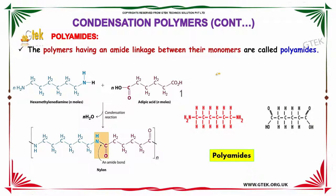Polyamides are polymers having an amide linkage between the monomers. For example, hexamethylenediamine of N moles reacting with N moles of adipic acid in the presence of N moles of water undergo condensation reactions to form nylons. Nylons contain an amide group, so they are called polyamides. NH₂ is the general representation of an amide.